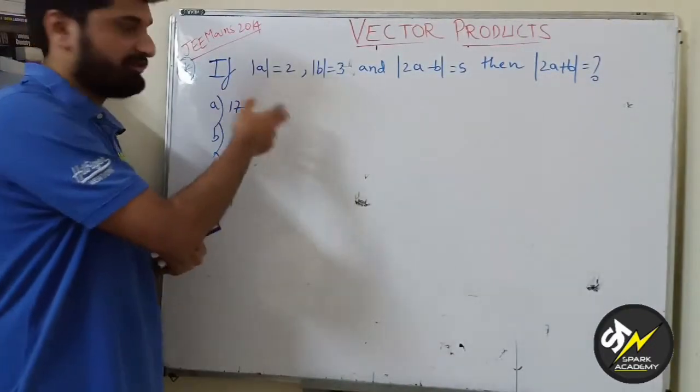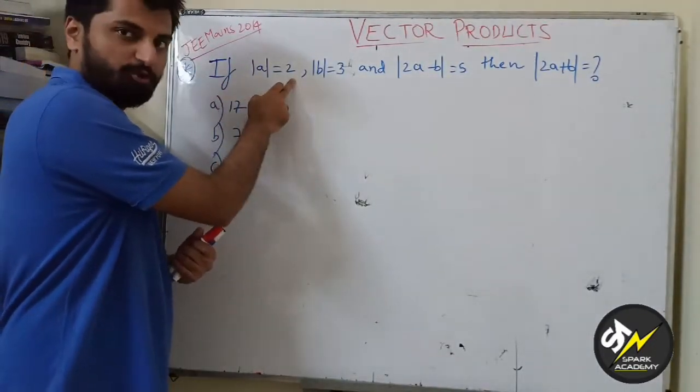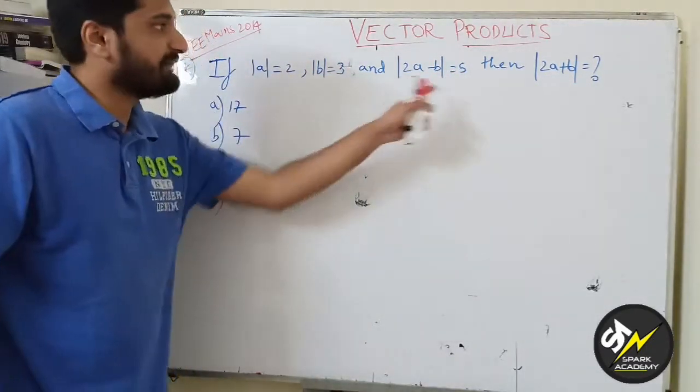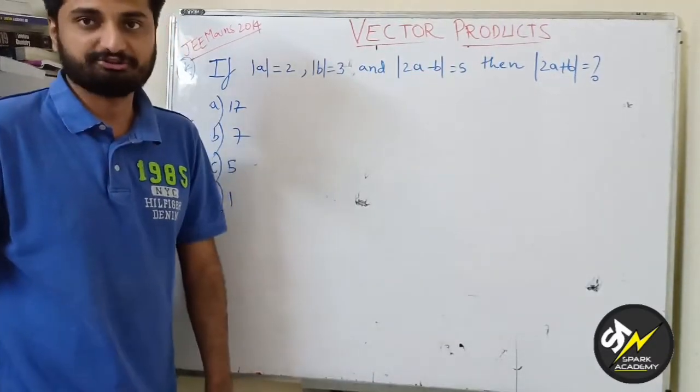The question is as follows: if |a| equals 2, |b| equals 3, and |2a - b| equals 5, then |2a + b| equals what?